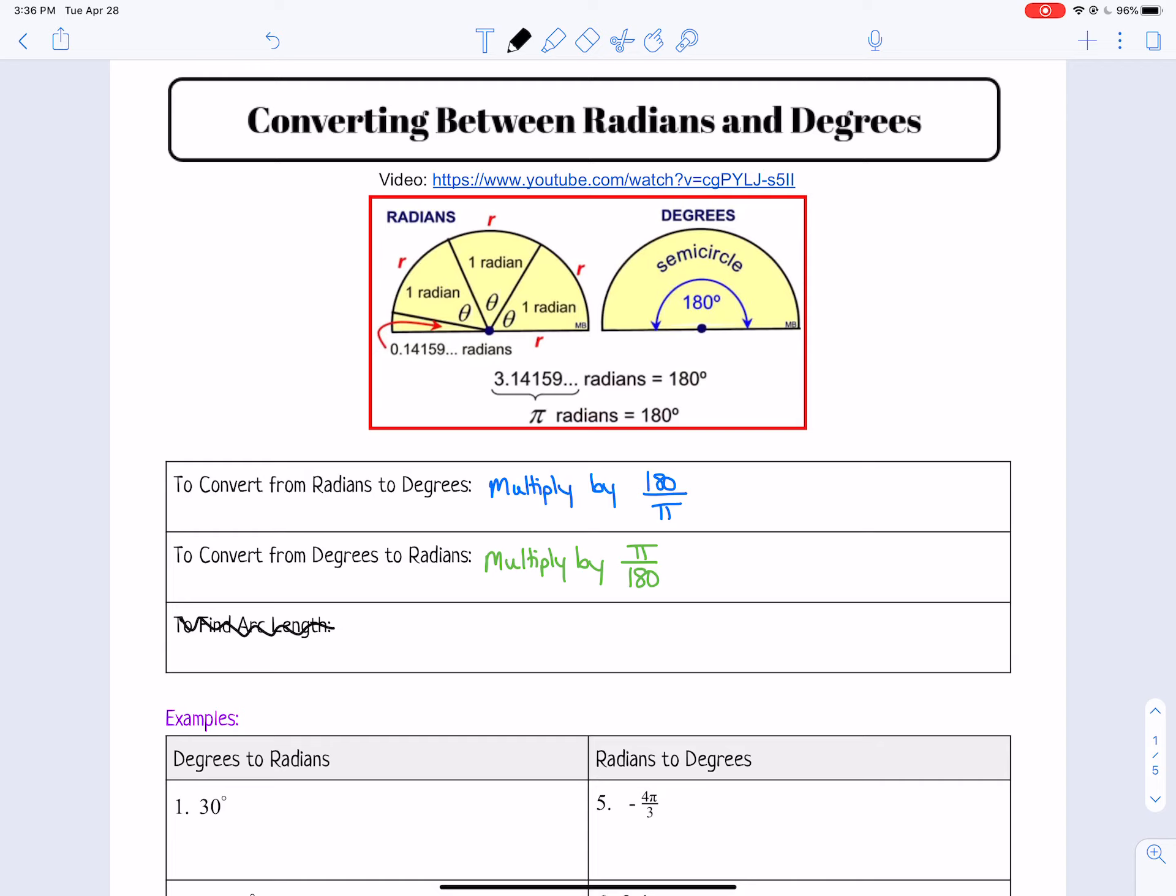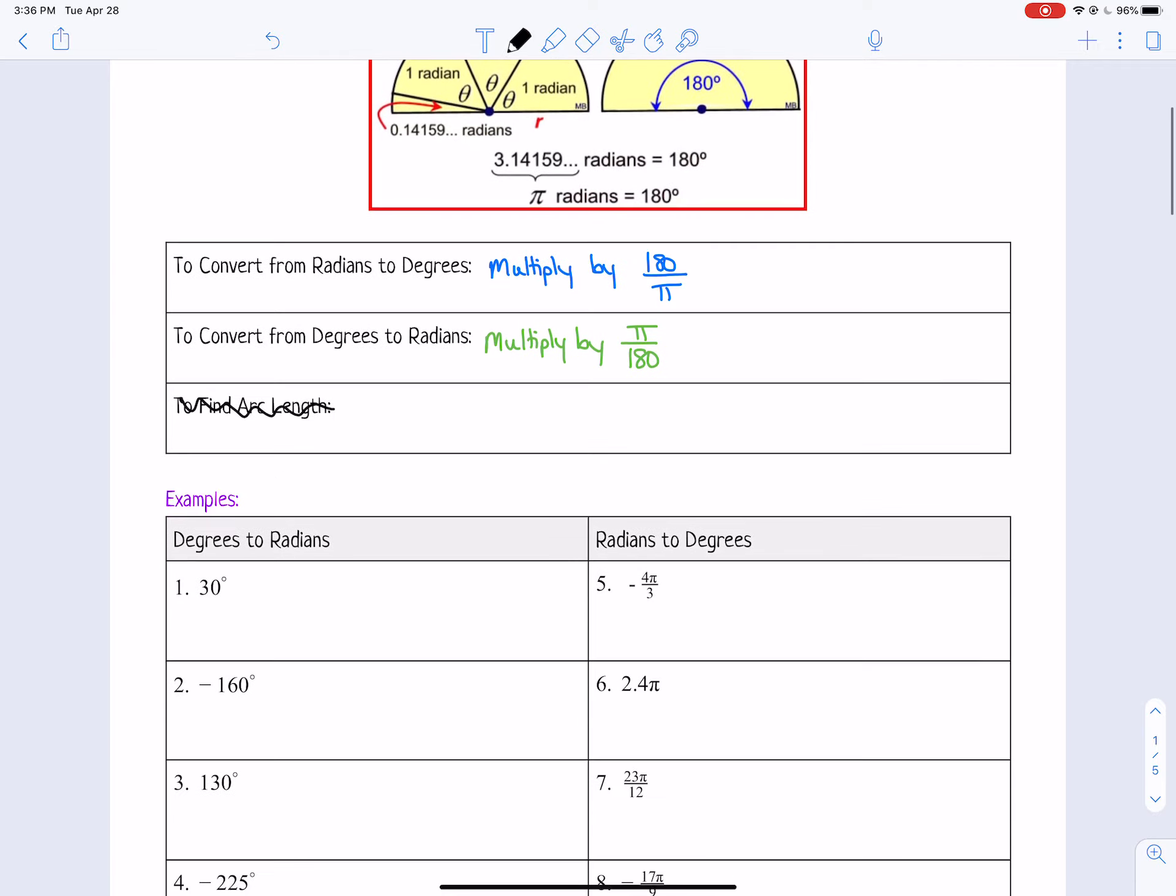To convert from radians to degrees, we simply need to multiply by 180 divided by pi. And to convert from degrees to radians, we need to multiply by pi over 180. So let's just do a few examples.